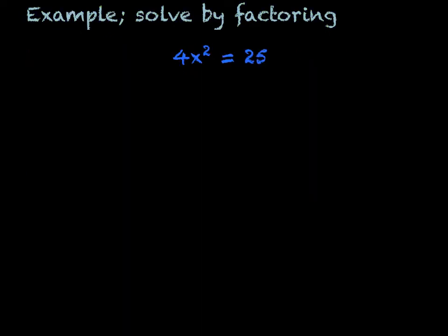In this last example, we have to solve by factoring. So we first need to get everything on one side of the equal sign. And that's going to be 4x² - 25 = 0. So this one doesn't have a clear-cut way to start. But if I know my perfect squares...